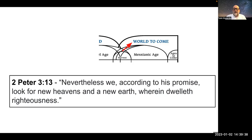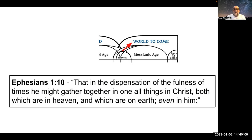2 Peter 3:13: 'Nevertheless, we, according to his promise, look for new heavens and a new earth wherein dwelleth righteousness.' This is the blessing of God's kingdom on earth — a new heavens, or ecclesiastical ruling power, and a new earth with a ruling power following the principles of God on earth. Ephesians chapter 1 verse 10 is another beautiful scripture: 'that in the dispensation of the fullness of times he might gather together in one all things in Christ, both which are in heaven and which are on earth, even in him.'